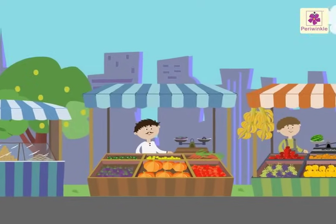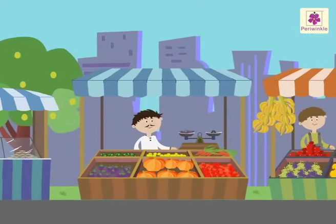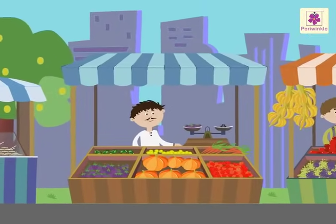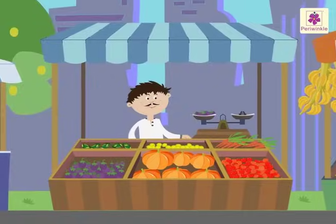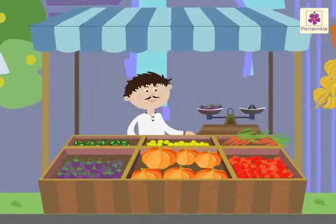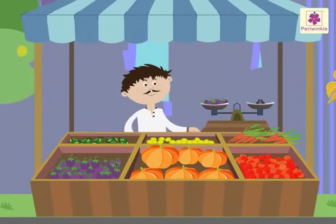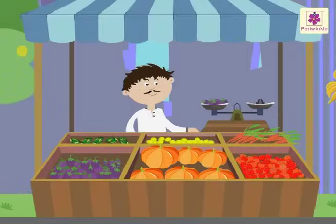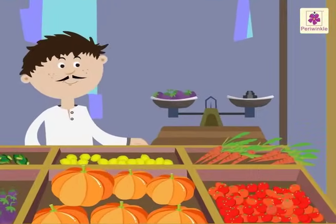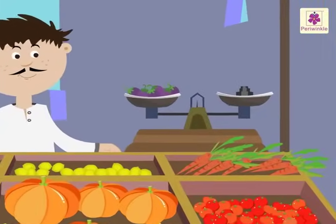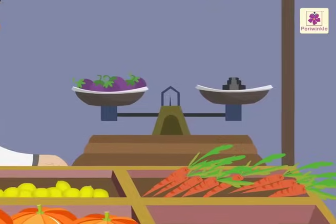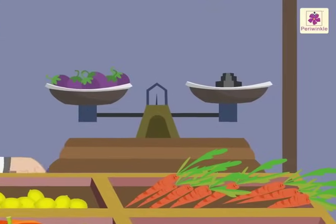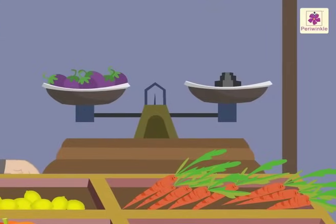Look at Ragu the vegetable seller — he is selling some fresh vegetables. Come, let's learn about weight with the help of these vegetables. Look at this: this is a weighing scale. We use a weighing scale to compare the weights of two objects.